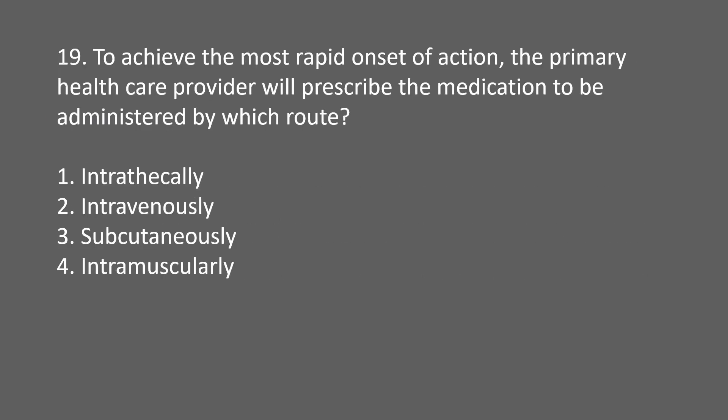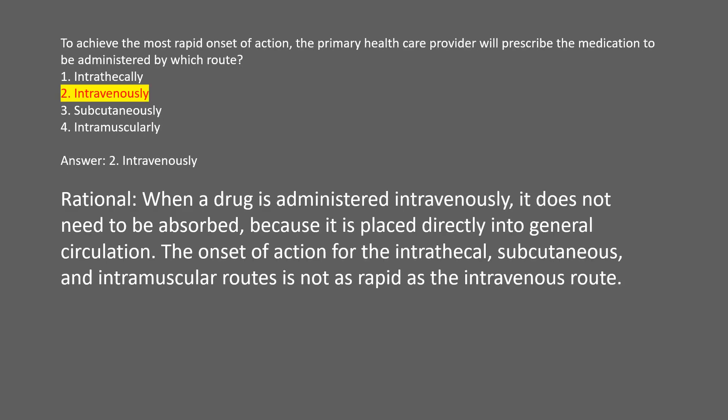To achieve the most rapid onset of action, the primary health care provider will prescribe the medication to be administered by which route? 1. Intrathecally. 2. Intravenously. 3. Subcutaneously. 4. Intramuscularly. Answer: 2. Intravenously. Rational: when a drug is administered intravenously, it does not need to be absorbed because it is placed directly into general circulation. The onset of action for intrathecal, subcutaneous, and intramuscular routes is not as rapid as the intravenous route.